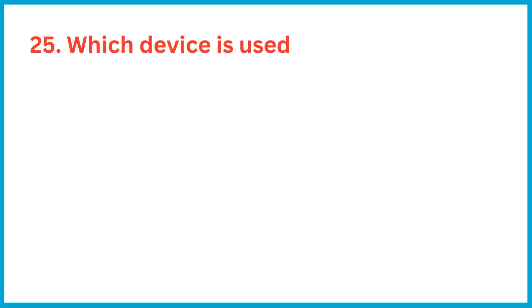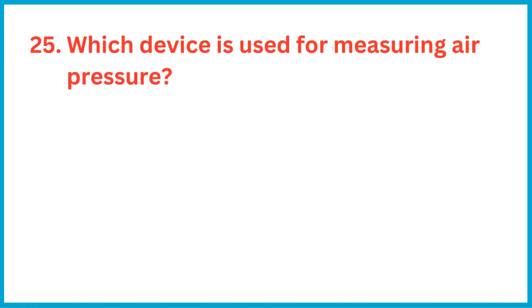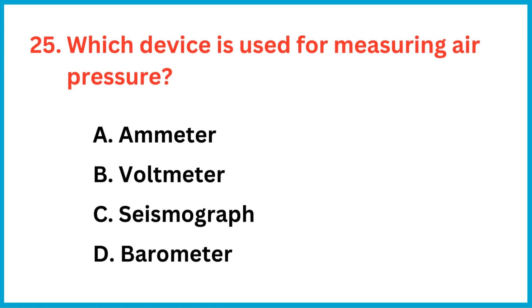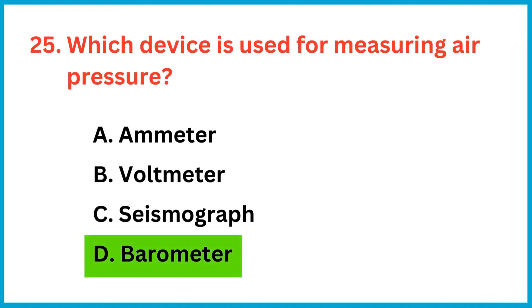Which device is used for measuring air pressure? The correct answer is option D: barometer.